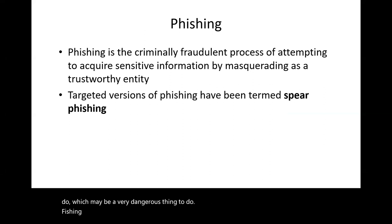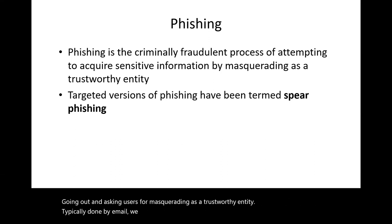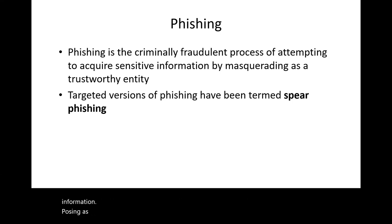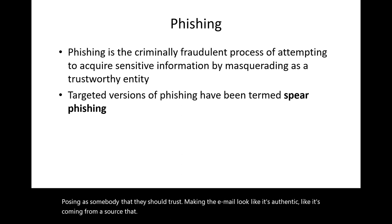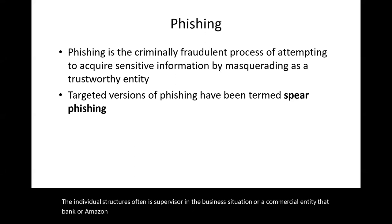Phishing is one fraudulent activity we're going to spend most of our time on today. Phishing is going out and masquerading as a trustworthy entity, typically done by email. You send an email message to somebody and ask them for information, posing as somebody they should trust, making the email look authentic — like it's coming from a supervisor in a business situation, or a commercial entity like a bank or Amazon.